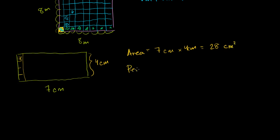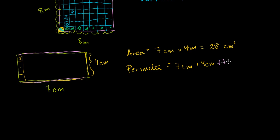What's the perimeter? It's going to be equal to this distance on the bottom, which is 7 centimeters, plus this distance over here, which is 4 centimeters, plus the distance on the top — this is a rectangle, so it's also 7 centimeters — plus the left-hand side, which is also 4 centimeters. So you get 7 plus 4, which is 11, and then another 7 plus 4, so 11 plus 11 equals 22 centimeters.